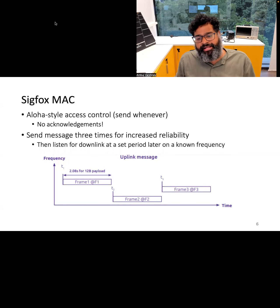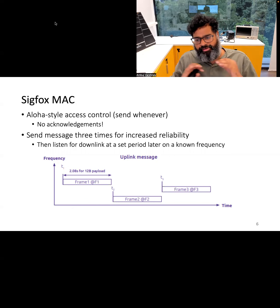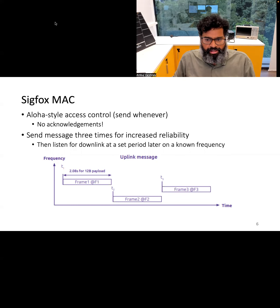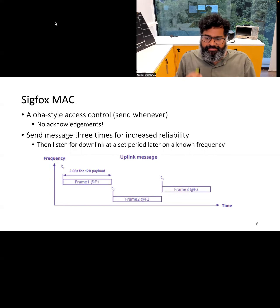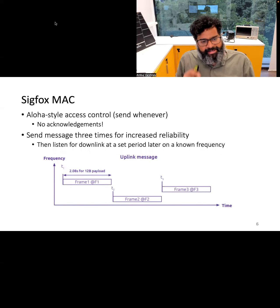The medium access control mechanism for Sigfox is an Aloha-style MAC, which means nodes can transmit whenever they want and there is no acknowledgement received. In particular, the Sigfox protocol sends the same message three times to increase reliability. After sending a transmission, Sigfox listens for downlink messages for a predefined period of time at a known frequency.